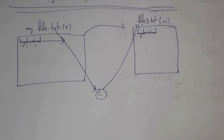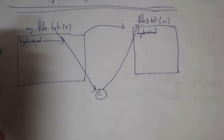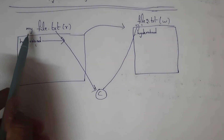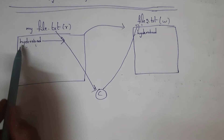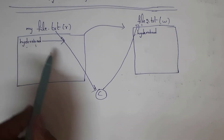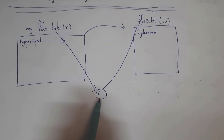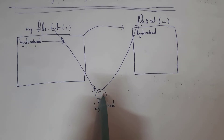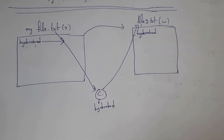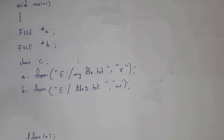Whatever text is present inside myfile.txt, I will first store it into a character variable called c, and then I will copy this text from character variable c to file2.txt.